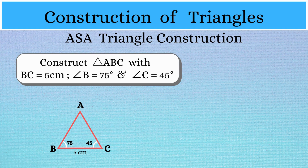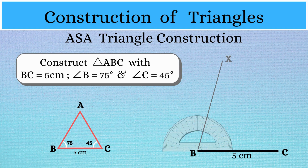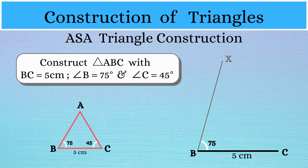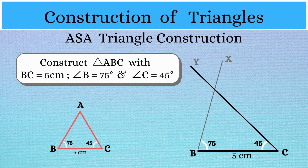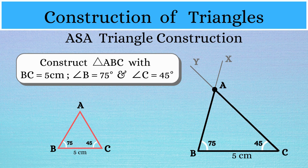Now let's draw the base: BC is a line segment of length 5 cm. Next, let's draw a line BX such that angle XBC is 75 degrees. Similarly, let's draw another line CY such that angle YCB is 45 degrees. Now the lines BX and CY intersect at a point, which is marked as A, and ABC becomes our triangle with the given measurements.